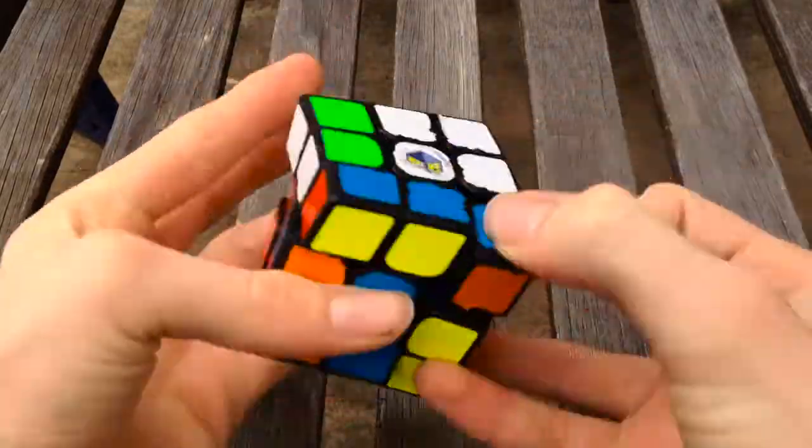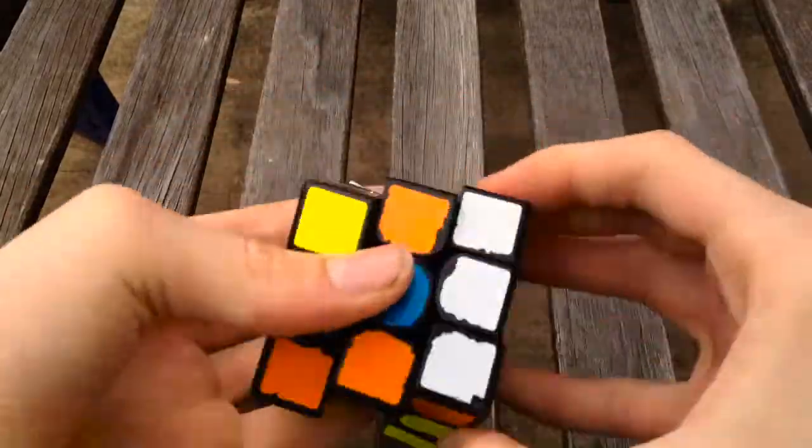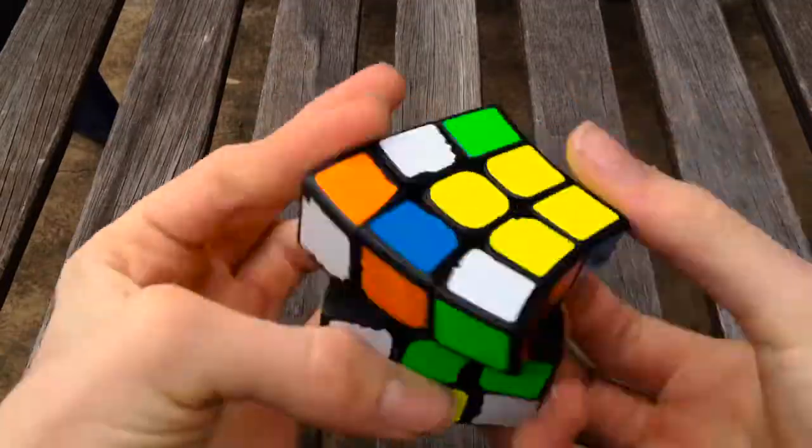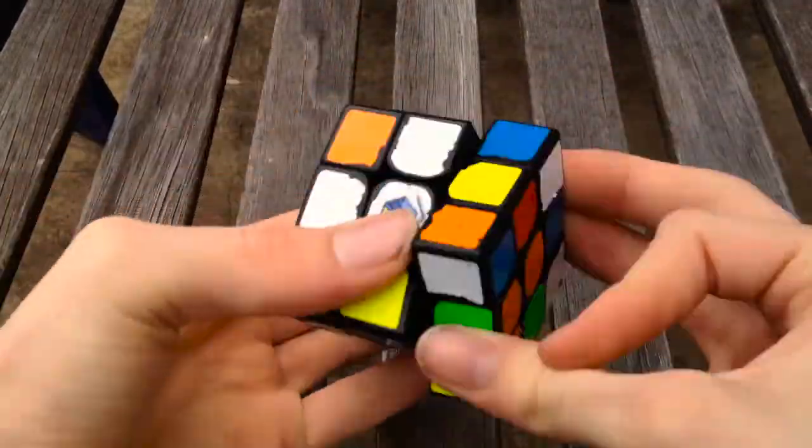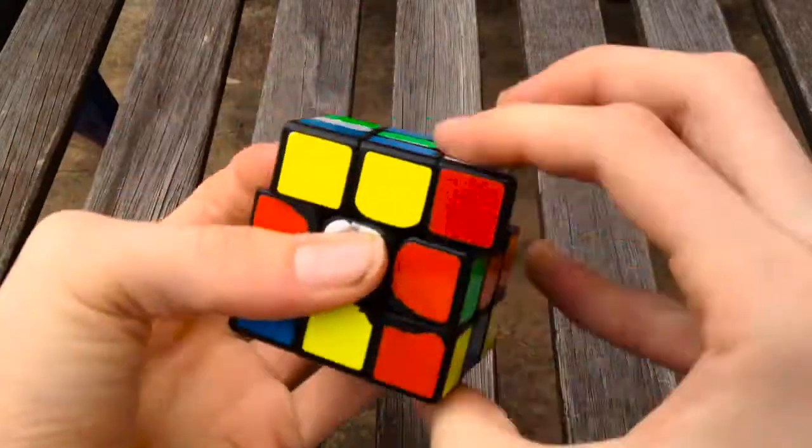After breaking in, this cube had a really great feel that I just adored. It was really smooth and buttery, and felt just like a really premium puzzle. Not at all what you would expect from something of the price. I'd probably describe it as a mix between the GTS 2M and the original Valk Power 3M.